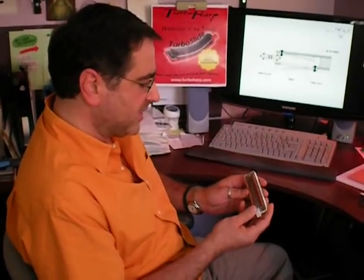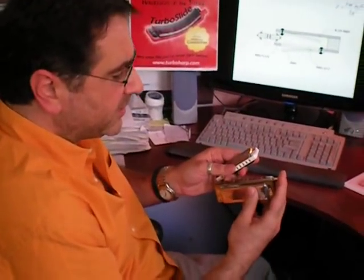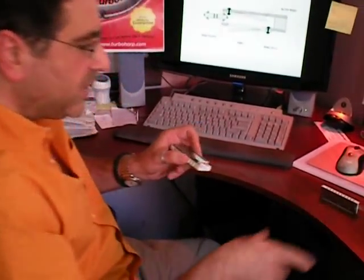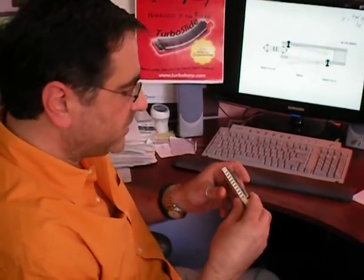It looks like a diatonic harmonica on the one hand. On the other hand, it has a button, kind of like a chromatic harmonica. But unlike the chromatic harmonica, it allows you to bend all of the notes on the blow register, either one at a time or all at once.